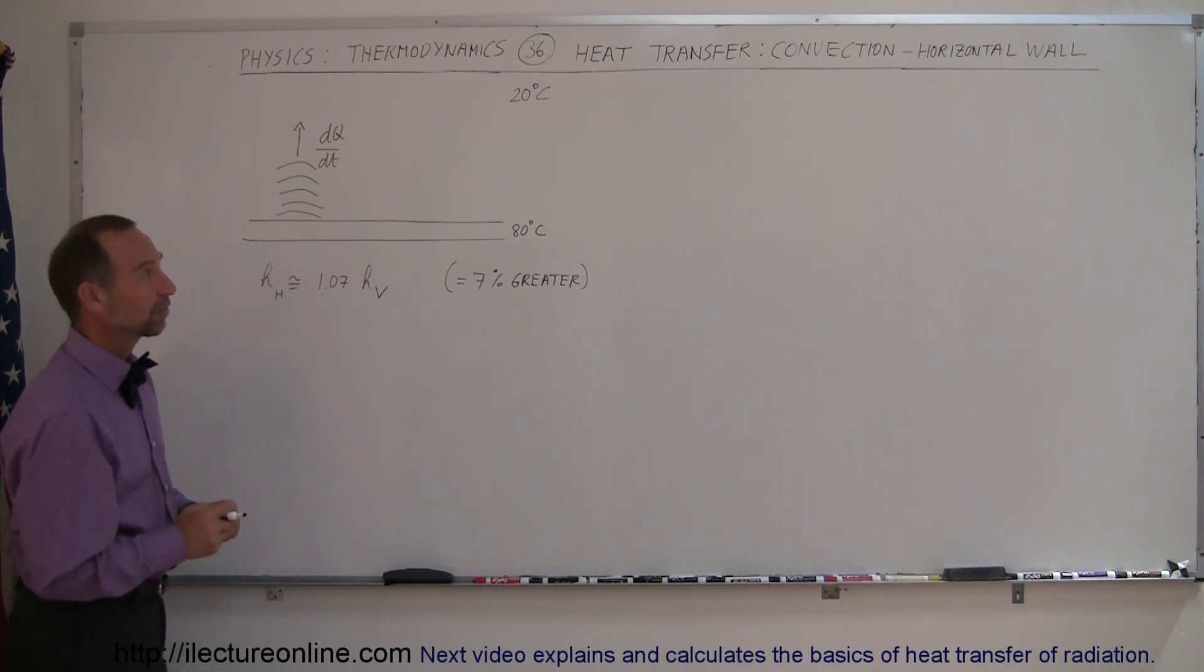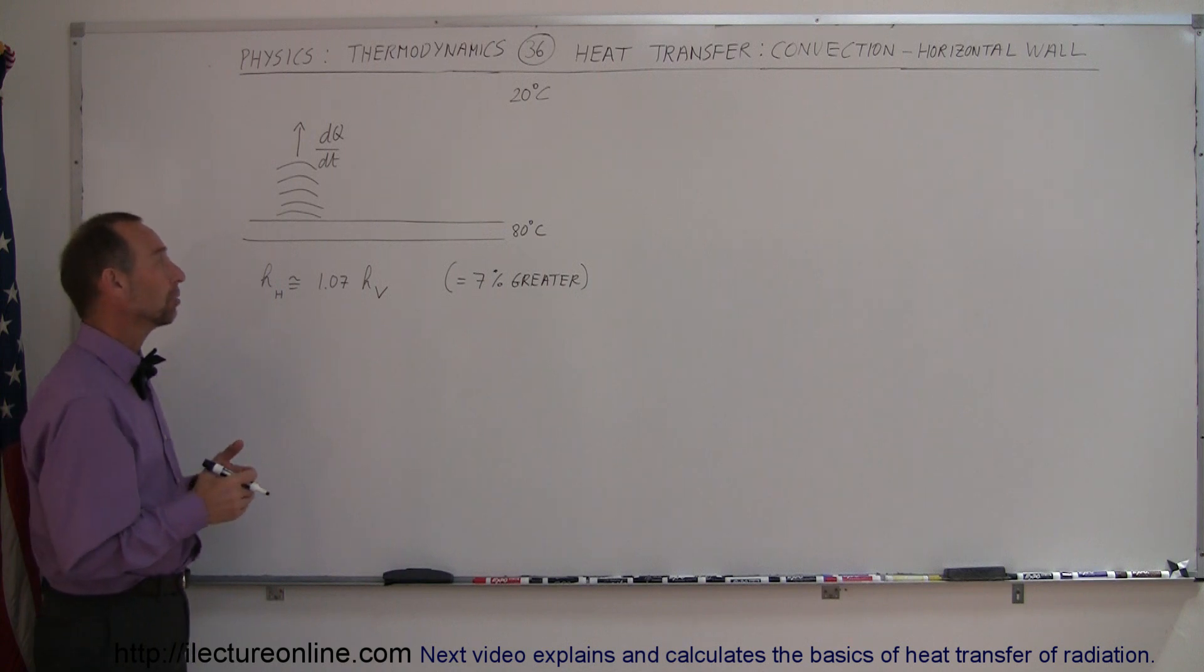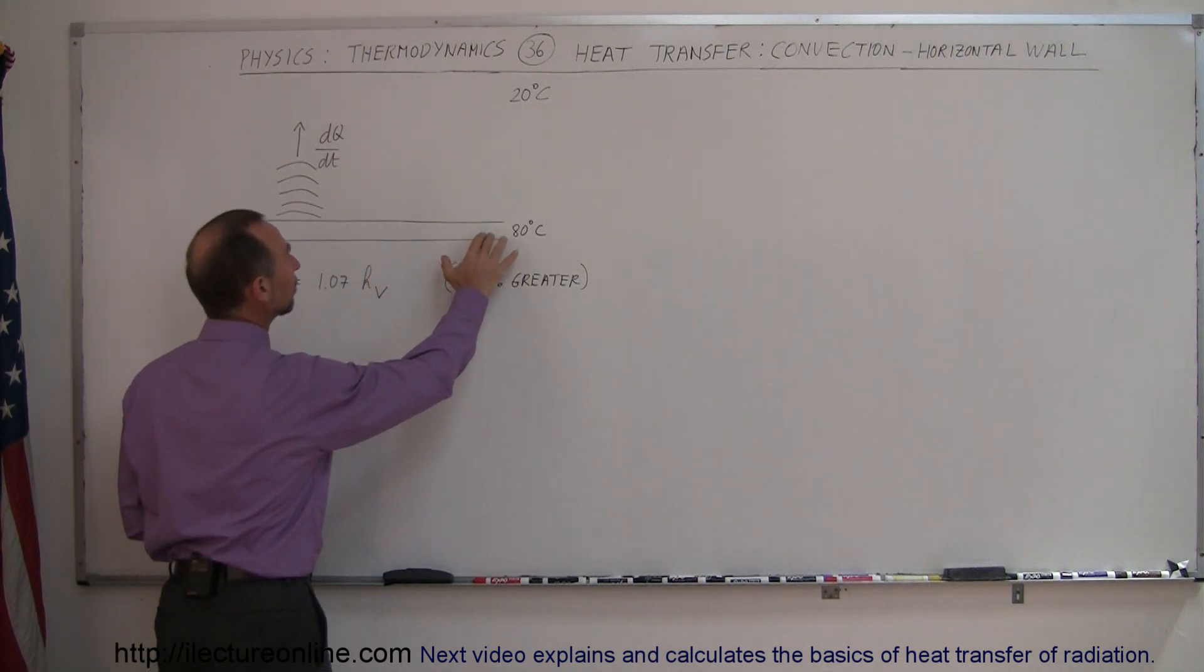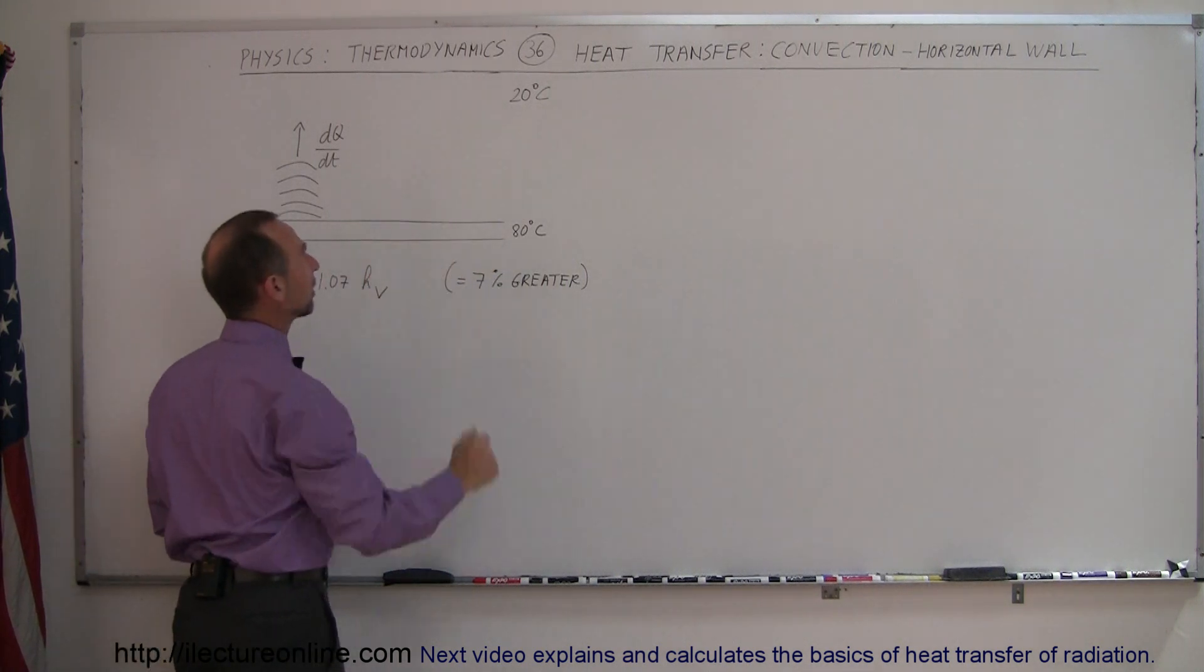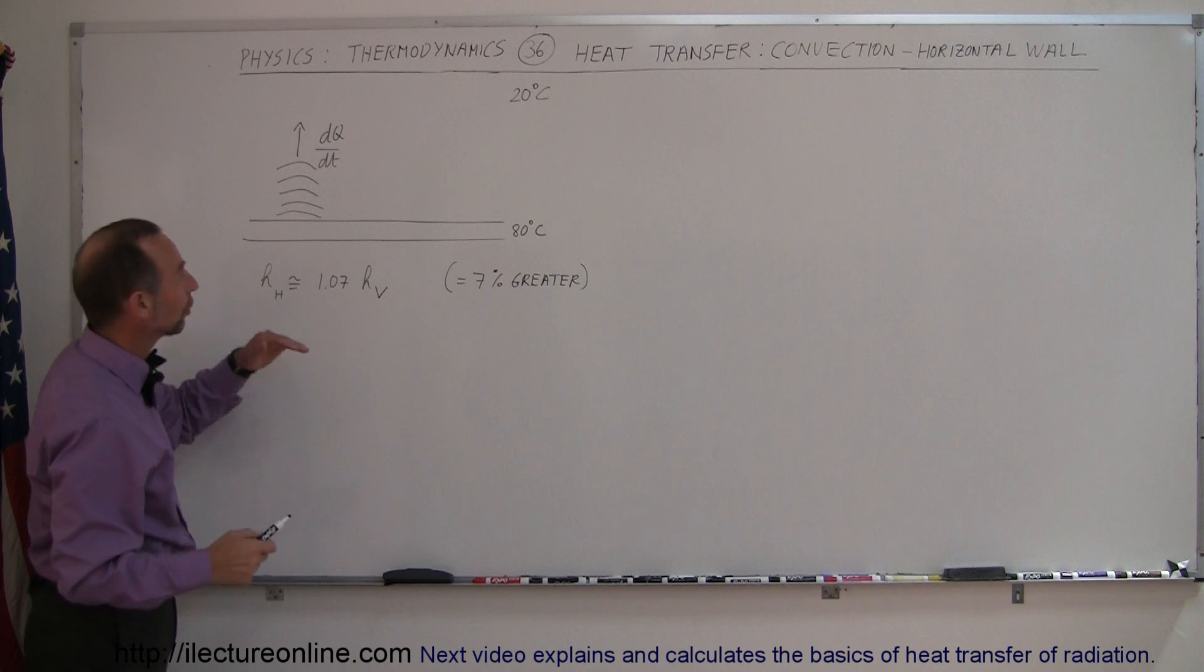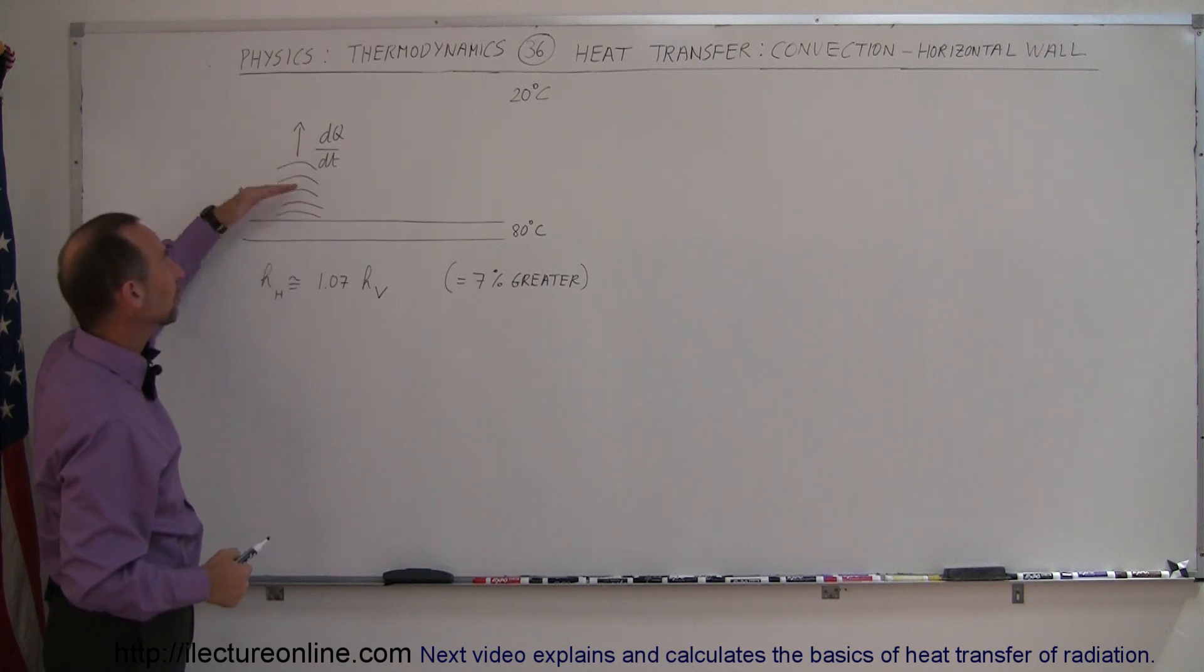Our next example on heat transfer through convection, we're going to look at a horizontal wall or maybe even a floor, a horizontal surface. Let's say that the horizontal surface is at a temperature of 80 degrees centigrade. The air temperature around it is at 20 degrees centigrade, and so the surface is going to be losing heat through convection.